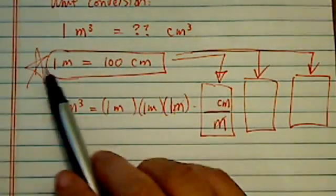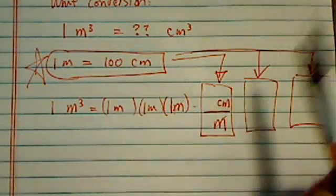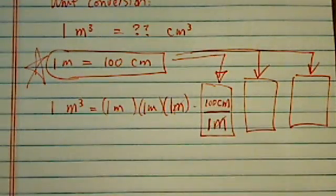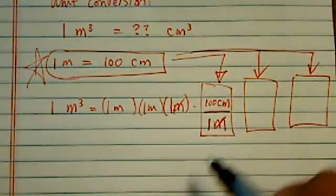Step two is I'm going to write this one exact equation in that one meter is equal to a hundred centimeters. Okay, that took care of the first one.